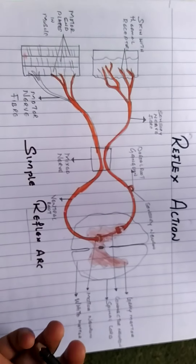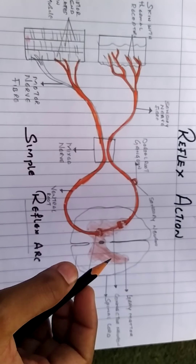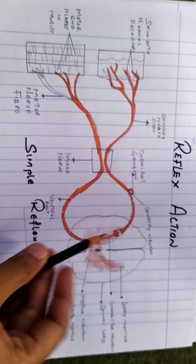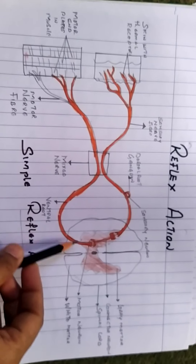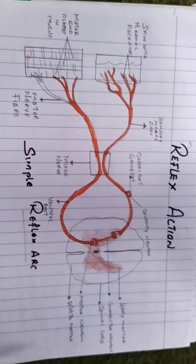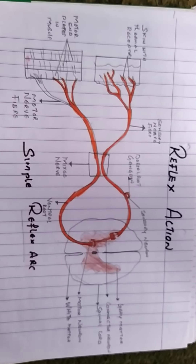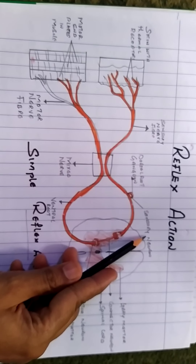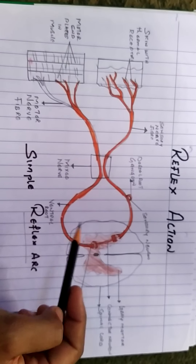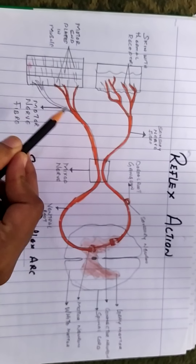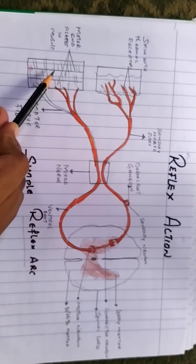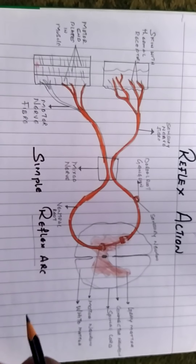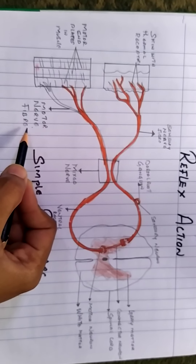The first component is the receptors or sense organs, which receive the information or stimulus. Next are the sensory receptors, or the afferent nerve, which transmit sensory impulses from the receptor to the spinal cord. The next is the interneuron or association neuron — these are neurons in the spinal cord connected with both the sensory neuron and the motor neuron, where they transmit the impulse from the former to the latter.